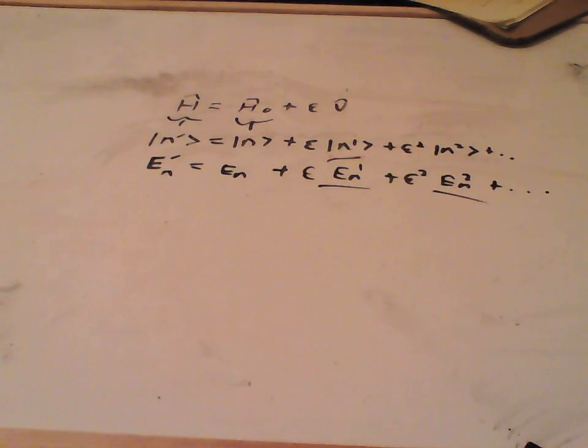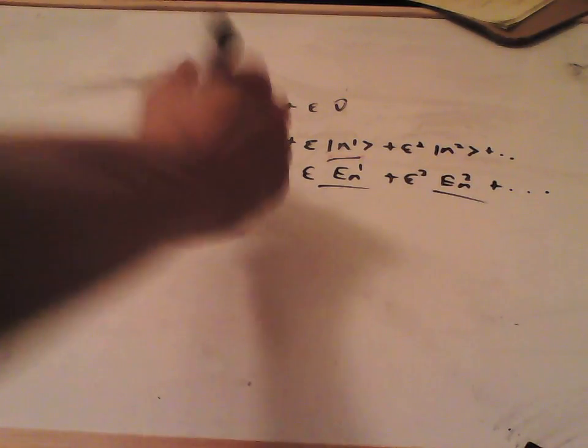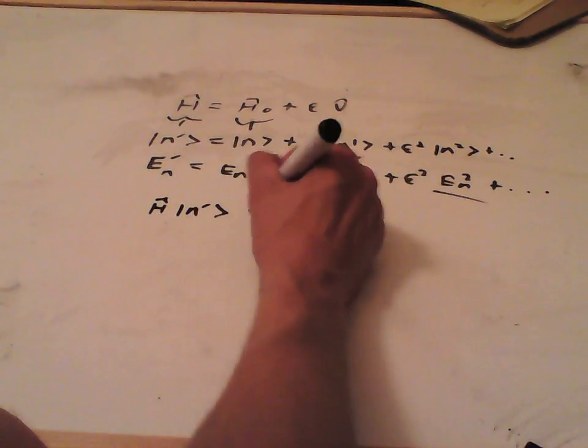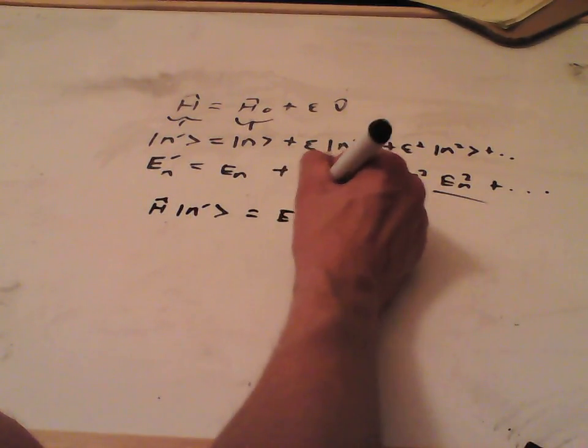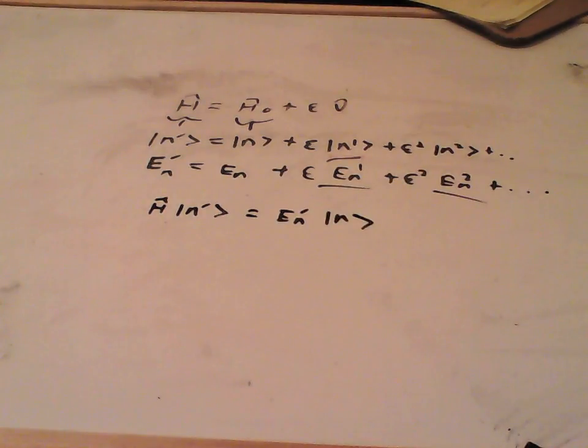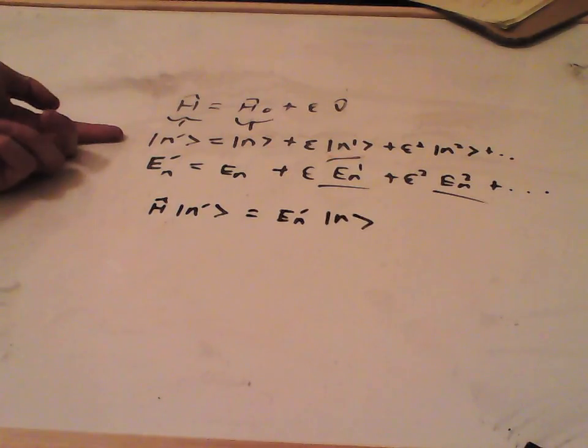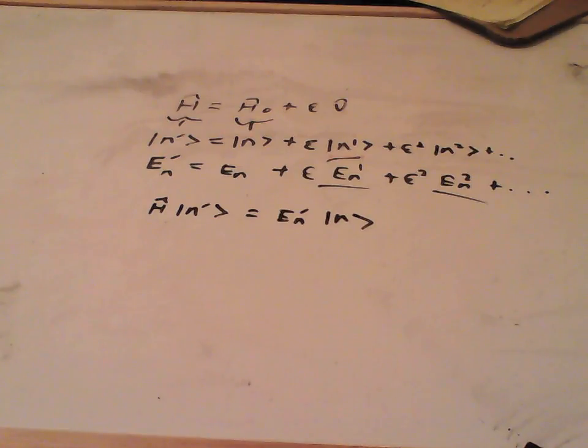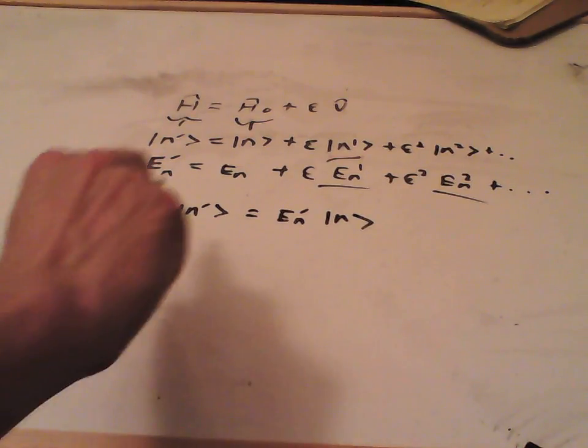So, how do we relate all of these things? Well, clearly we're going to look at the time independent Schrödinger equation. So, this says that H times n prime must equal En prime n prime. That's clearly the result by definition of En and n prime.